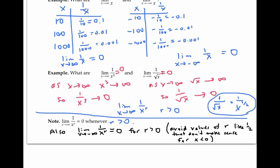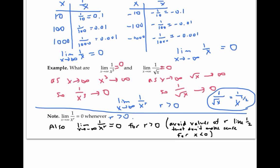Notice that this is no longer true if r is less than zero. For example, with r equals negative two, one over x to the minus two is really x squared, and the limit as x goes to infinity of x squared is going to be infinity, not zero.